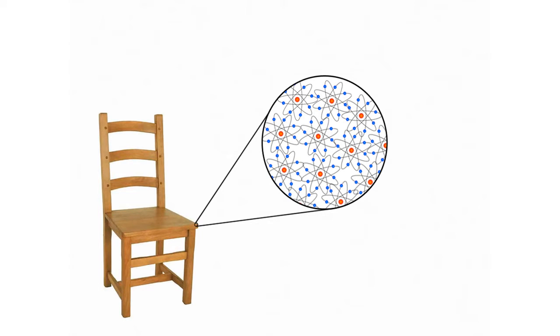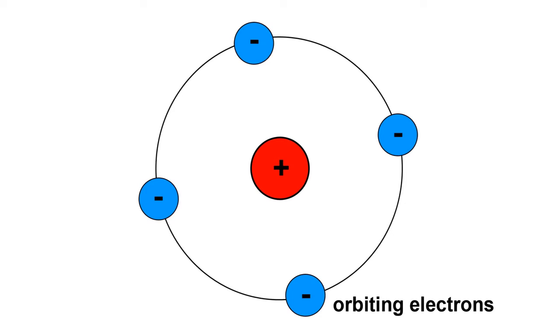So you probably know that everything around you is made up of tiny particles called atoms. The simplified model of an atom has a positively charged center called the nucleus and you have negatively charged electrons orbiting around it.